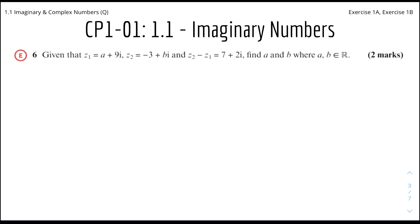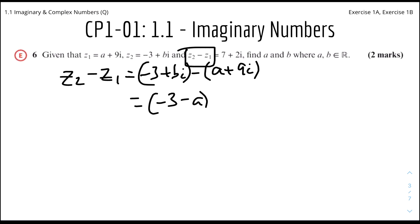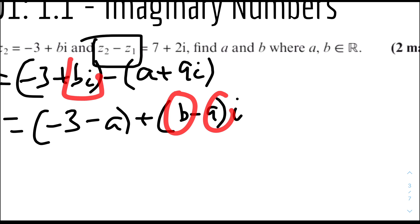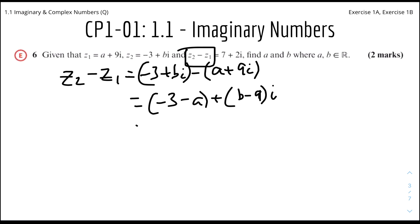Moving on, we have question 6. Given that z1 equals a plus 9i, z2 equals minus 3 plus bi, and z2 minus z1 equals 7 plus 2i — find a and b where a and b are real numbers. We compute z2 minus z1: that's (minus 3 plus bi) minus (a plus 9i), which simplifies to (minus 3 minus a) plus (b minus 9)i.